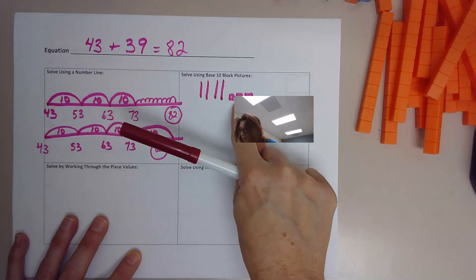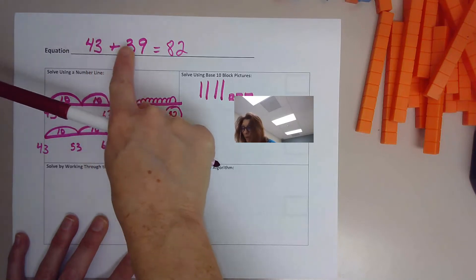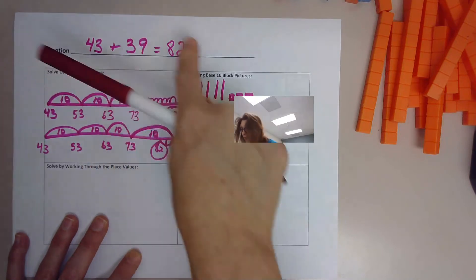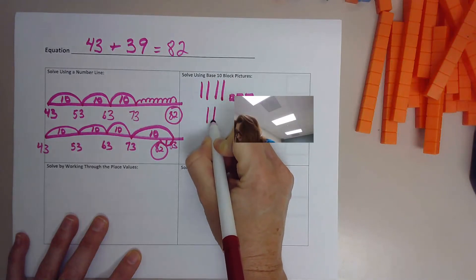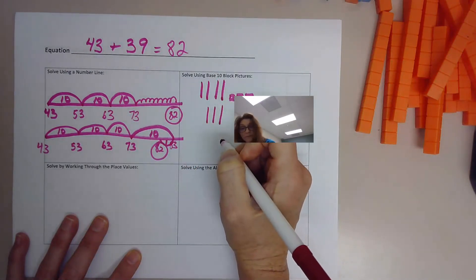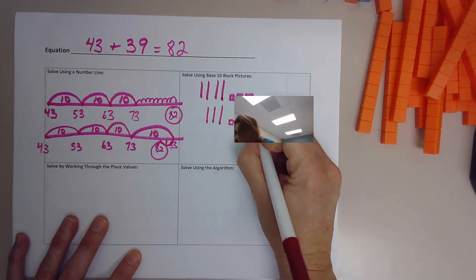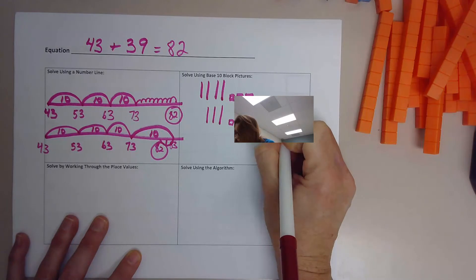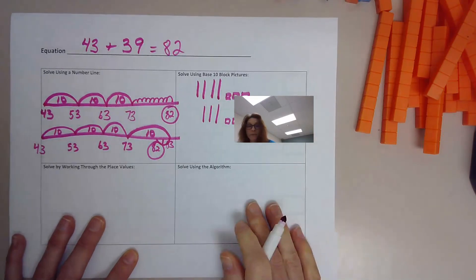So 10, 20, 30, 40, 41, 42, 43. There's our 43. And now we want to add 39. Underneath it, let's do 39. 10, 20, 30, 31, 32, 33, 34, 35, 36, 37, 38, 39. Okay.